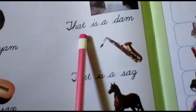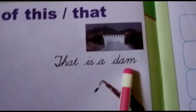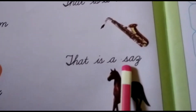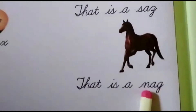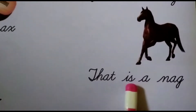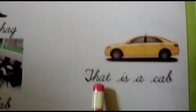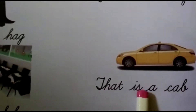That is a dam. What is that? That is a dam. That is a socks — one of the instruments. That is a nag. Nag means horse running — the horse will be running fast. That is a nag. That is a cab. Cab means car. That is a car.